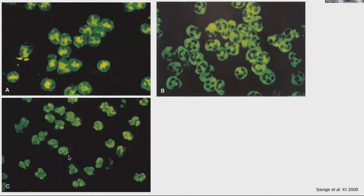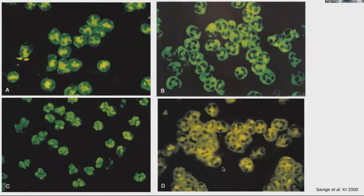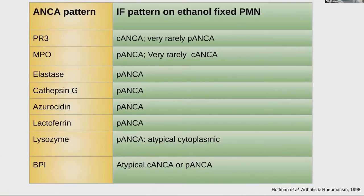The second IF pattern is atypical PR3, where the PR3 is more widespread. C is a patient with P-ANCA because it's perinuclear. D is a patient with IF positive for both P-ANCA and C-ANCA. MPO and PR3 are not the only antigens present in neutrophils — there are many others such as elastase, cathepsin G, azurocidin, lactoferrin, lysozyme, and BPI. Most of these atypical antigens show a P-ANCA or mixed pattern on IF.